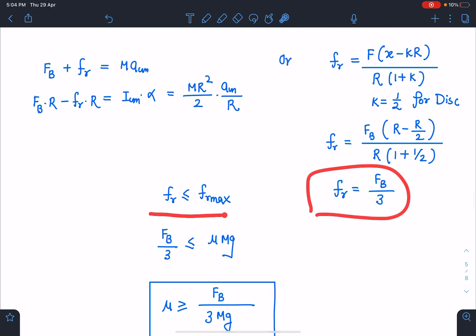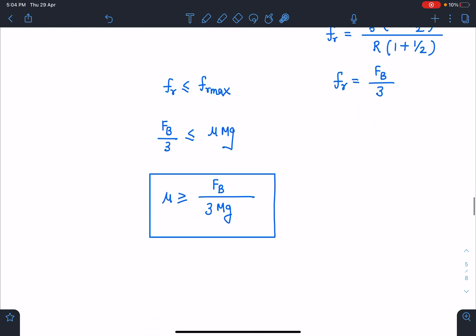So Fᵣ = Fᵦ/3. Now Fᵣ is going to be less than or equal to maximum value of friction, and maximum value of friction in this situation is going to be μMg. So we are going to get this μ limiting value of μ to be, it should be just greater than or equal to Fᵦ/(3Mg).